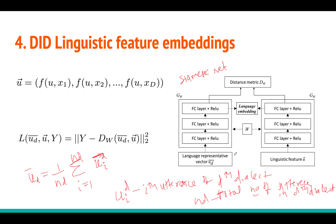In the CMS network, the idea is to learn similarity between embeddings. If u_d_bar is the vector for dialect 1 and u is from the same dialect, we want to minimize the distance between them. Conversely, we want to maximize the distance between embeddings of different dialect classes.